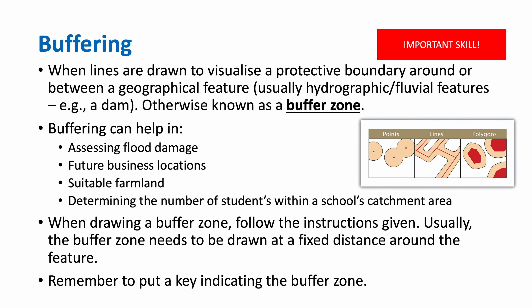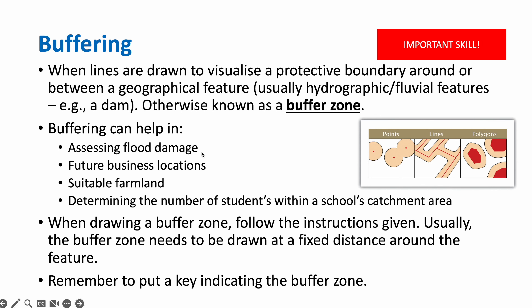An important skill assessed in IB Geography Paper 2 is buffering. When lines are drawn to visualize a protective boundary around or between a geographical feature, this is known as a buffer zone. Usually this geographical feature is a hydrographic or fluvial feature, for example a dam. Buffering can help in assessing flood damage, future business locations, suitable farmland, and determining the number of students within a school's catchment area.